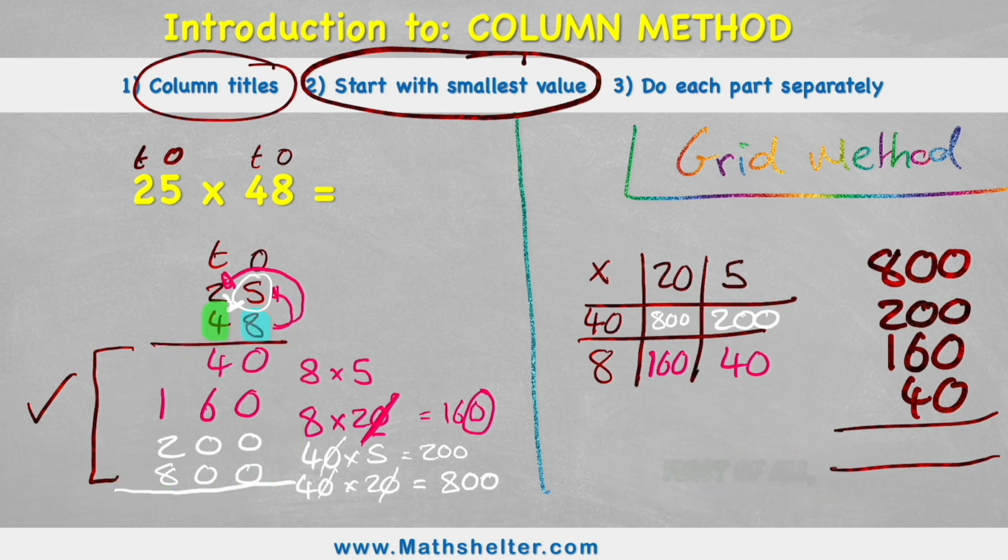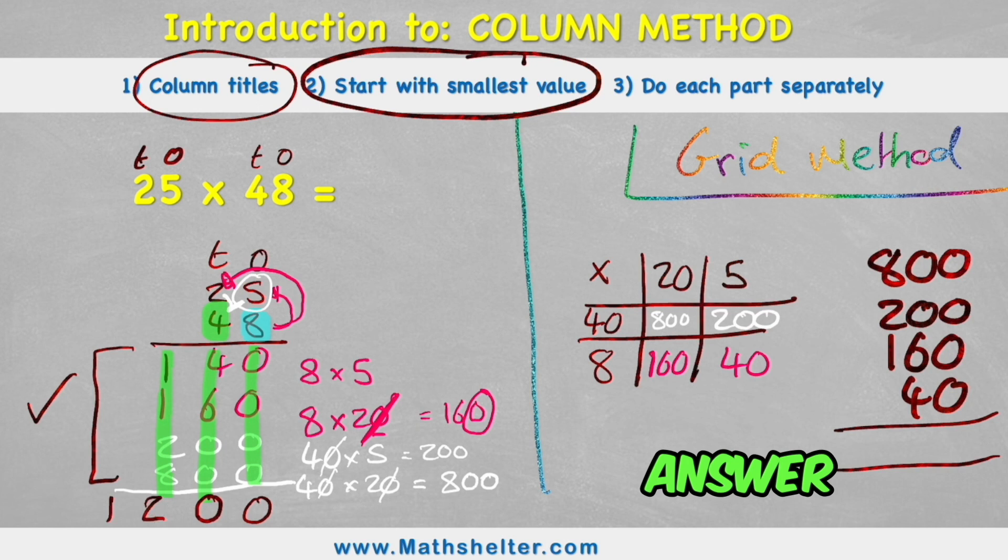So looking in the 1s column first of all, I have 0, 0, 0, 0. So it'll give me an answer of 0. In the 10s column, I have 4 and 6, which is 10. So carry a 1 across, put my 0 in place. And then in my 100s column now, I have a 1 and a 1, a 2 and an 8, which equals 12. I have nowhere else to go, so I can just put all my answer into the answer row. Making my answer 1,200.